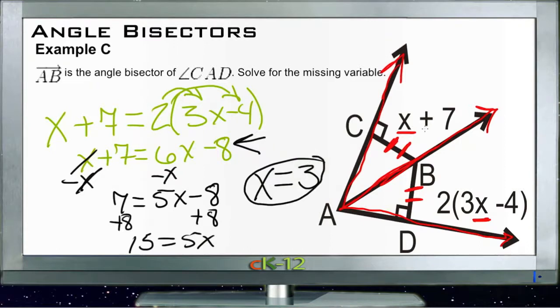Which tells us 3 plus 7 is 10, so this side over here is 10 units. And 3 times 3 is 9, minus 4 is 5, times 2 is 10. So they're the same, as of course we would hope they would be. And that's it.